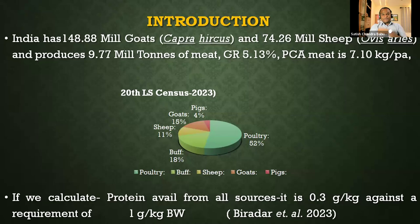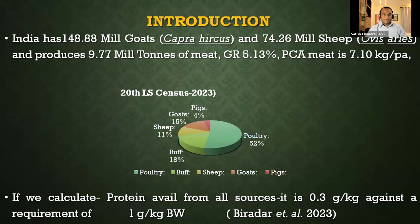All future students attending this webinar must know that there is tremendous work available in small ruminant production. It is totally untouched. Unlike poultry, the price of small ruminant meat is not controlled by government, so that advantage is there. We have wonderful feed resources available in the form of grass, grains, crop residues, and industrial byproducts. The same principles from cattle and buffalo production can be applied to take meat production to a very high level.